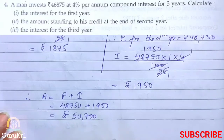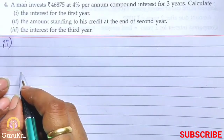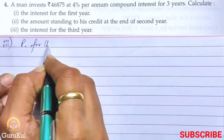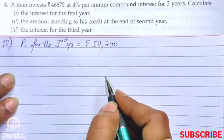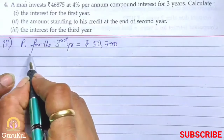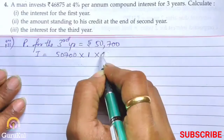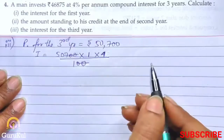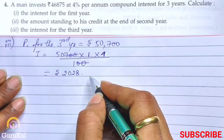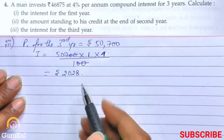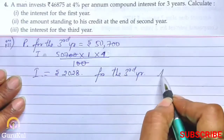So we have the answer for the second part of question number 4. Now the third part asks us to calculate the interest for the third year. Principal for the third year is rupees 50,700, which was the previous year's amount. Interest equals 50,700 into 1 into 4 by 100; equal zeros cancel, giving rupees 2,028. This is the interest for the third year.